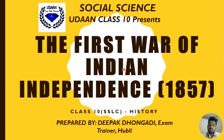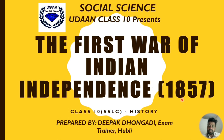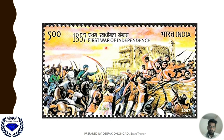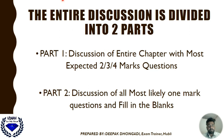Hello everyone, I am Deepak from Udan class 10 rapid revision classes. In this topic, today I will be discussing the first war of Indian independence 1857 — how the Indians fought against the British, and what are the causes and results. This chapter is divided into two parts: part one covers the expected 2-3-4 mark questions, and part two covers one-mark and fill in the blanks.